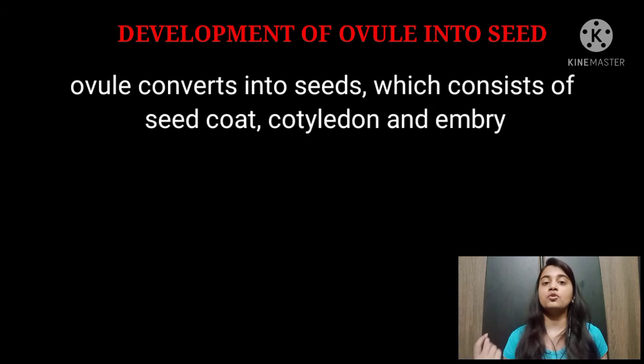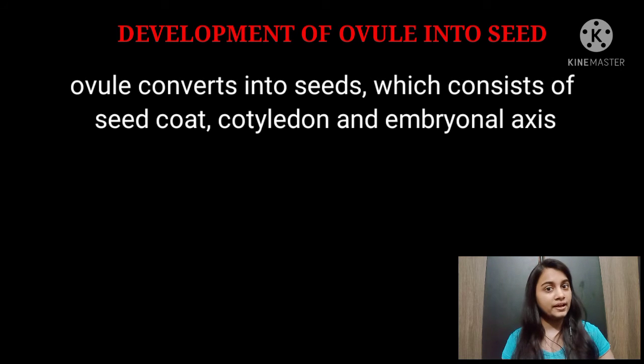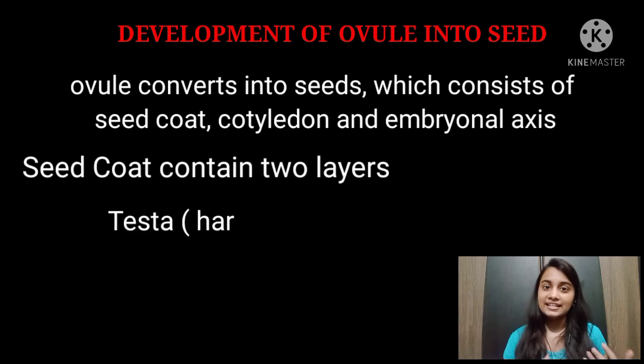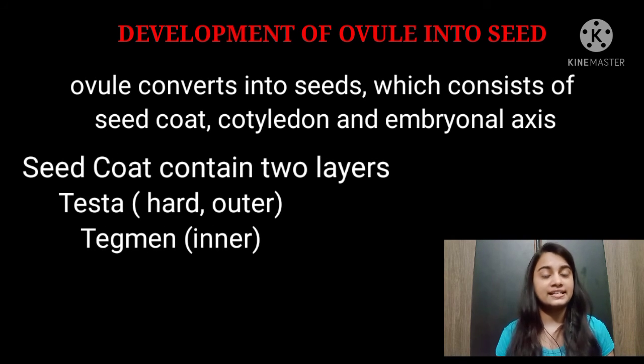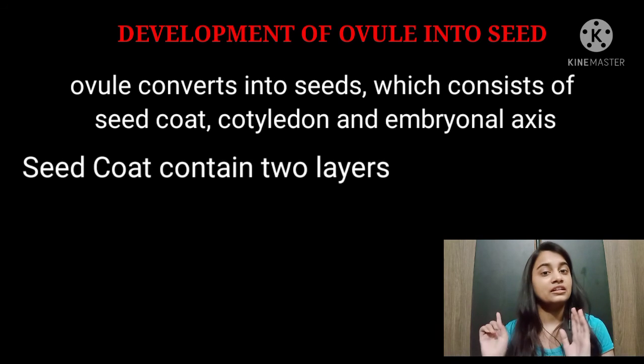Now let's talk about seeds. Ovules convert into seeds. A seed consists of a seed coat, cotyledons, and embryonic axis — which we have already studied in the embryo topic. The seed coat is divided into two layers: the outer hard layer called testa, and the inner layer called tegmen. So two layers — testa and tegmen.